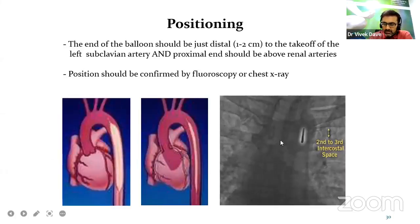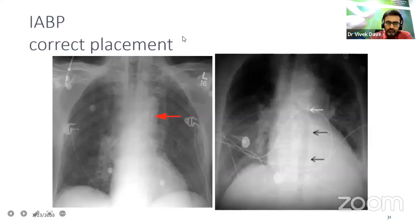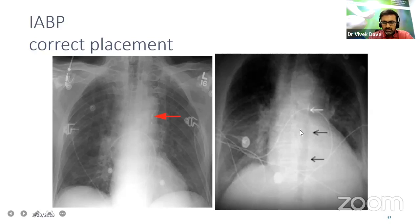This is the chest X-ray — you can see the second to third intercostal space. This is the balloon: you can see the inflated balloon and the deflated one, and this is the tip of the IABP. This is the subclavian artery — the tip is supposed to be just distal to the takeoff of the left subclavian artery. You can see on the screen the correct placement of the intra-aortic balloon pump with the arrow showing the tip and the inflated balloon membrane.